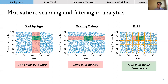Instead of sorting by a single dimension, we can sort based on a multi-dimensional grid. For example, we can have a grid with six vertical partitions over age and five horizontal partitions over salary, which combined gives us 30 uniformly sized cells. All points falling in the same cell are stored contiguously, so we only scan the points in the cells that overlap with the green query rectangle. This grid layout gives us the ability to filter by both dimensions simultaneously.